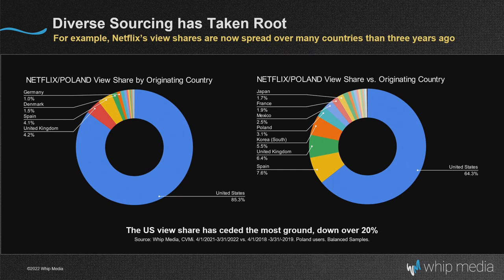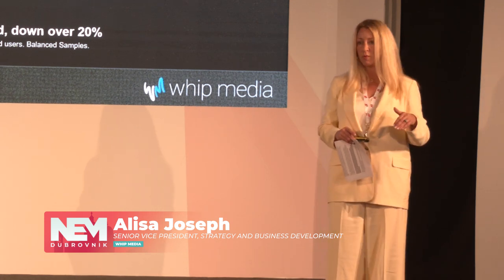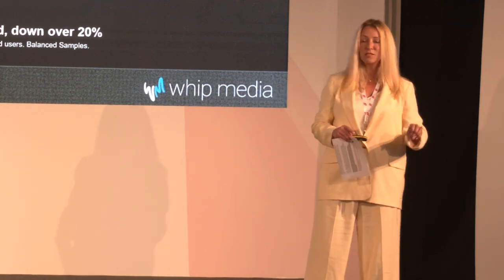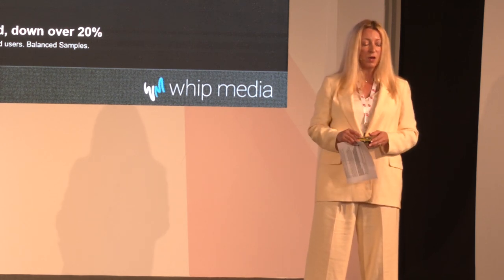In general, diverse sourcing for content is taking root, and Netflix has been a leader here. We've done analysis on both Netflix and Amazon. Looking specifically at Poland: over a three-year period, US content consumption is down by almost 20%. So you've got a 10% overall decline in Europe and a 20% decline in Poland. There's lots of diversification and new kinds of content coming in from other parts of the world — just another illustration of what's happening overall.